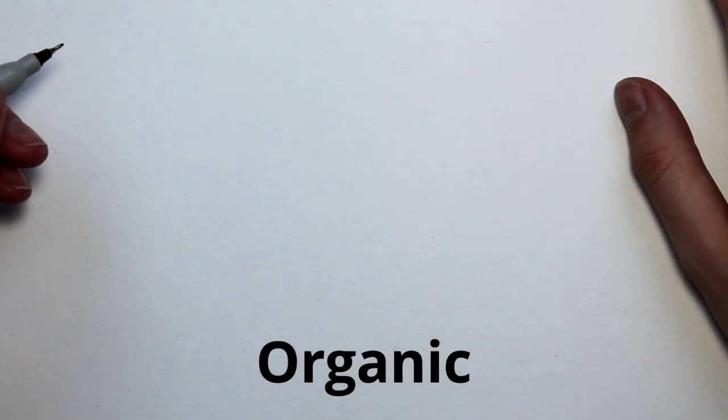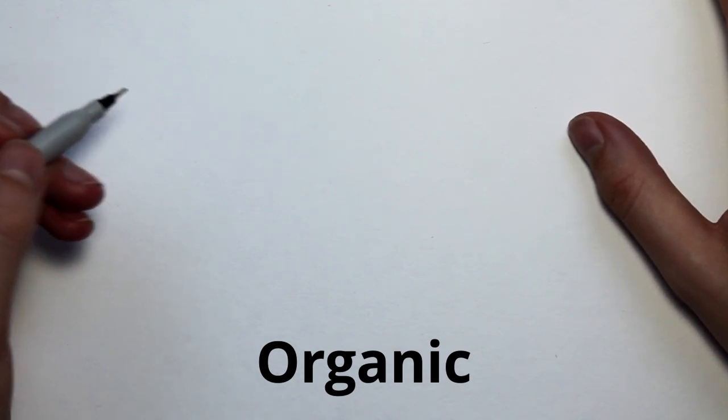Hello and welcome back to Art Bytes. Today we're going to be looking at shape. Shape is one of the seven visual elements.